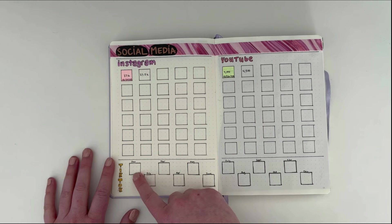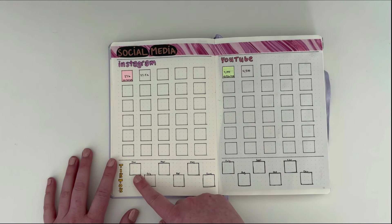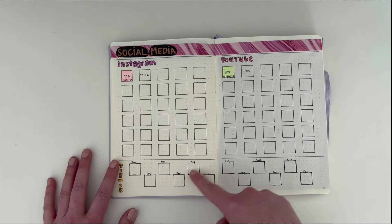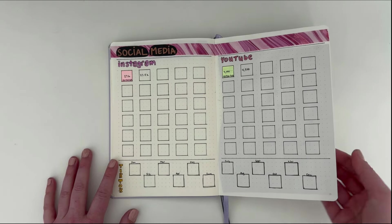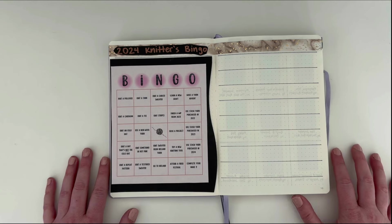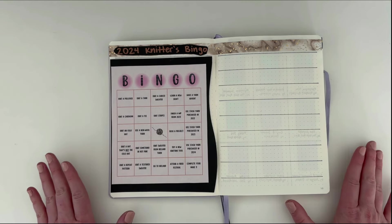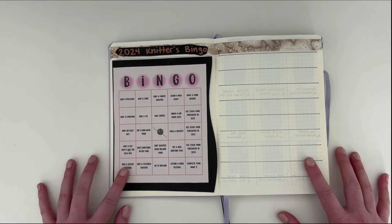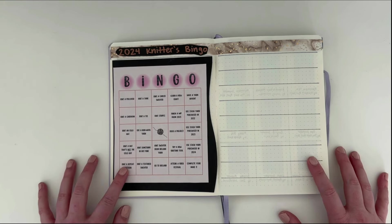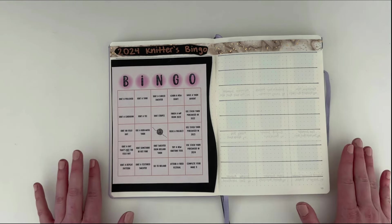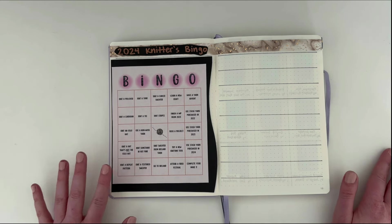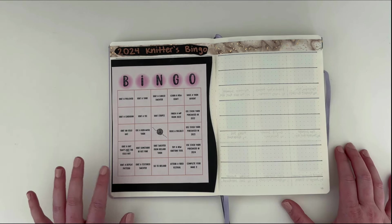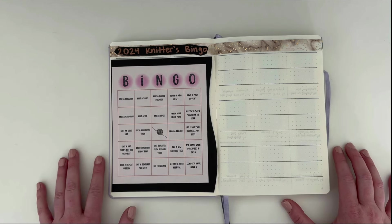And then for TikTok down here, I don't really have a goal to grow my TikTok channel. I'm just going to track my number of followers at the end of each month. This is something really fun. If you watched my original video, I had my bookshelf here. I was going to be tracking my books. I decided to get a completely separate journal to track my books and to do normal journaling stuff in. And so I wanted to change this page and I changed it to my 2024 knitters bingo.